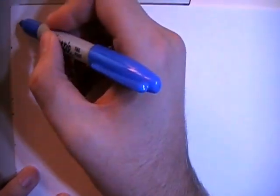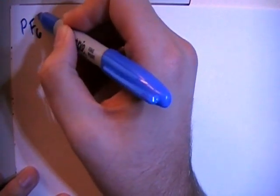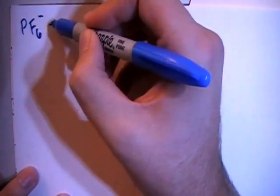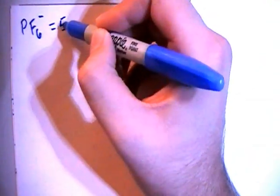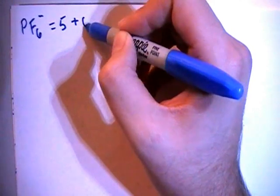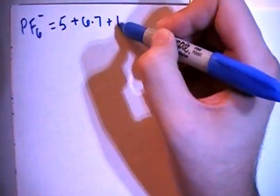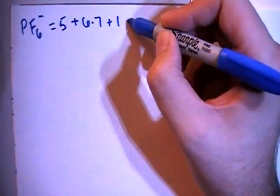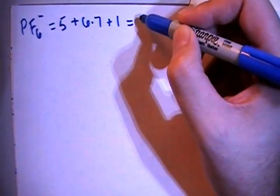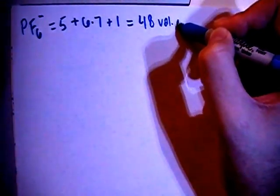The hexafluorophosphate is going to be PF6 minus. And that's going to give us 5 valence electrons from the phosphorus plus 6 fluorines each with 7 valence electrons plus 1 more electron because of the minus 1 charge, for our overall total of 48 valence electrons.